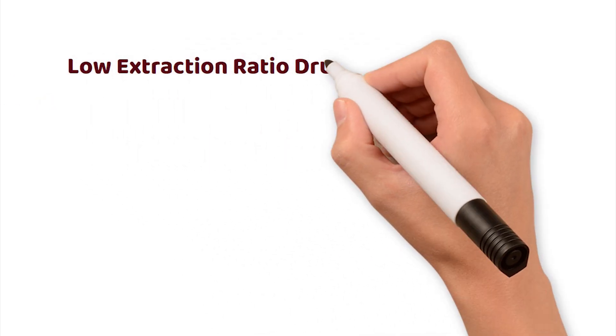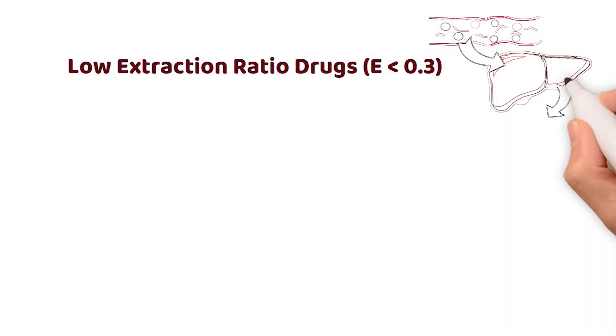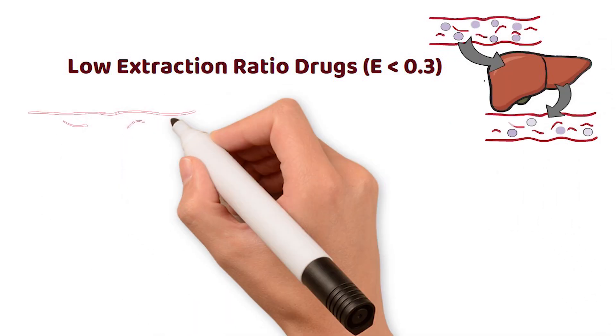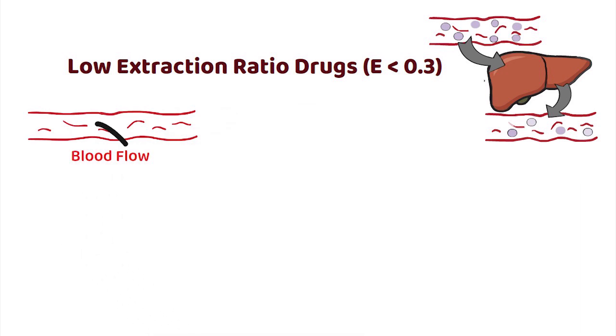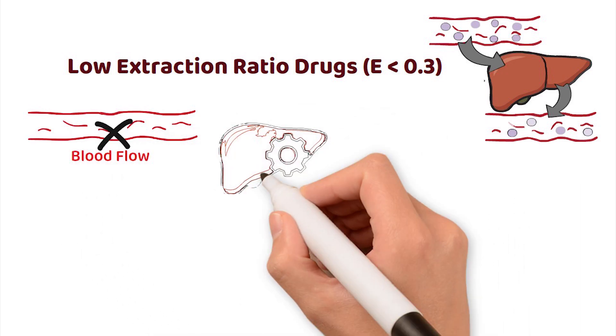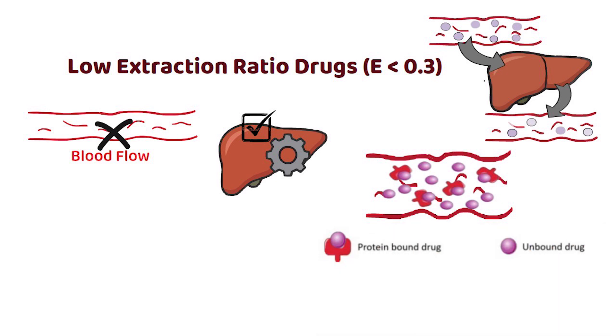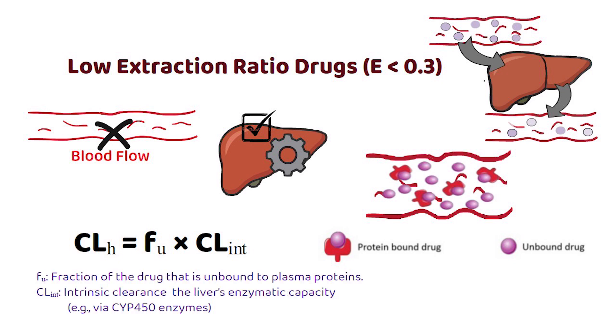For drugs with a low hepatic extraction ratio, only a small portion is removed by the liver during a single pass through the circulation. In these cases, hepatic clearance isn't limited by blood flow, but rather by how well the liver can metabolise the drug, and how much of that drug is actually free and unbound in the bloodstream. That's why hepatic clearance for these drugs is defined by the following relationship.